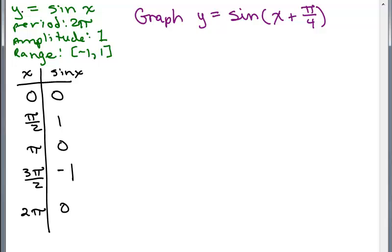Remember when we graphed y equals sine of x, we had these five key ordered pairs: (0, 0), (π/2, 1), (π, 0), (3π/2, -1), and (2π, 0).